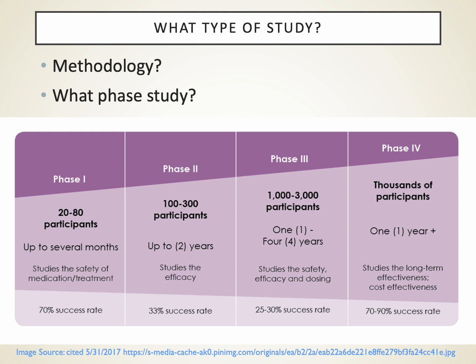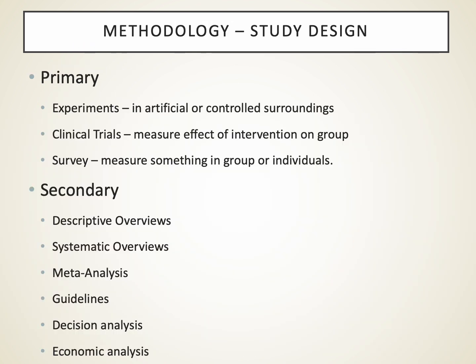You also want to know the methodology and what phase of the study — was it an animal model, or for human studies, was it phase one, two, three, or four? Was the methodology primary or secondary? Primary experiments include clinical trials and surveys presenting all the data. Secondary evaluations are reviews, systematic overviews, meta-analyses, or guidelines that compile multiple primary references. The advantage of a secondary reference is broader coverage of the issue, but the potential problem is that you're relying on the secondary analysts to have accurately and competently captured the primary literature.